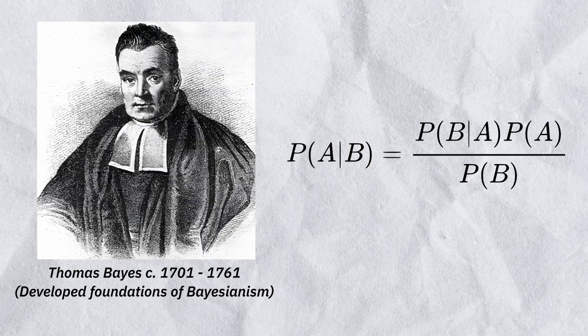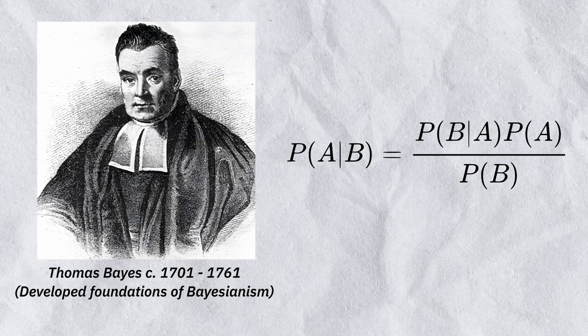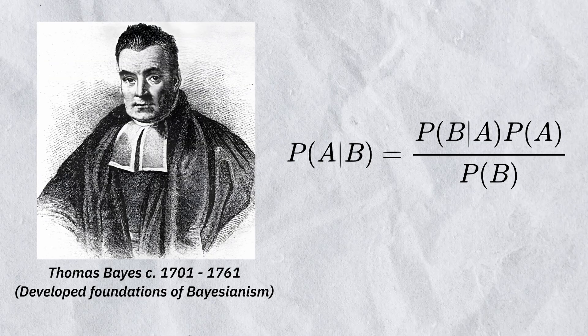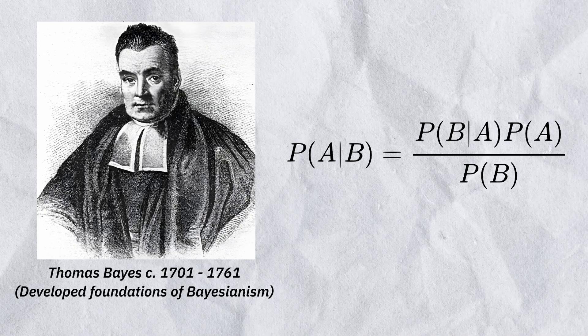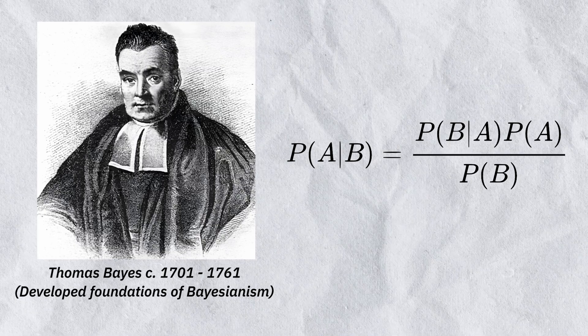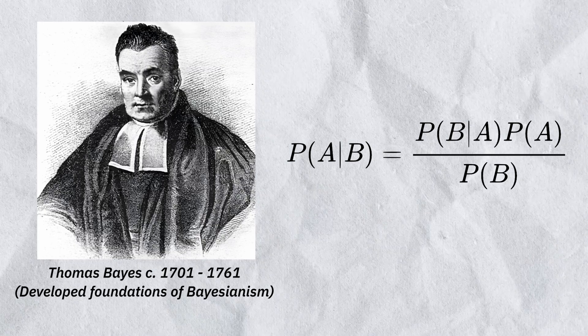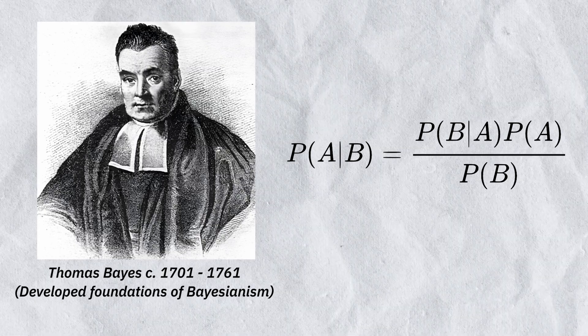This idea is based on a type of mathematics called Bayesianism that was first developed hundreds of years ago, and it describes how our probabilities should change in the face of evidence. To learn a lot more about this topic, check out our free interactive module about the question of evidence on our website at clearerthinking.org.